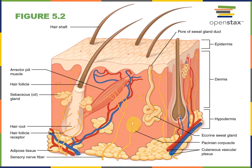Large blood vessels called the cutaneous vascular plexus travel through the hypodermis and send smaller branches through the dermis. There are no blood vessels that actually travel through the epidermis because the epidermis is made of epithelial tissue — there are no blood vessels within epithelial tissues.